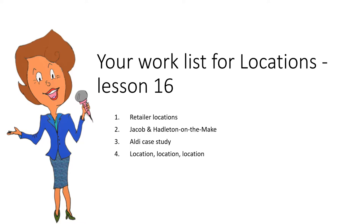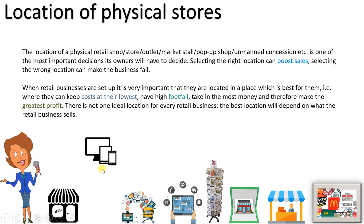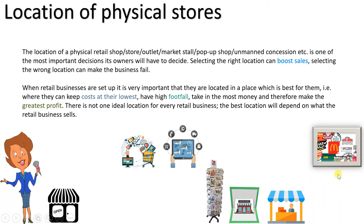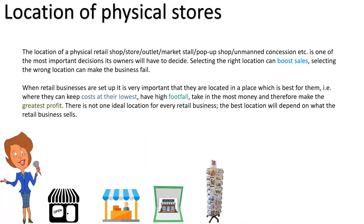For the location of physical stores, we definitely don't want online — that goes. We also can't have multi-channel or hybrid because we're looking only at physical locations. Franchise also needs to go as that's a particular type of business. That leaves us with a physical store, a concession, a pop-up, and a market stall. Those are the physical stores we're going to consider for this part of the lesson.